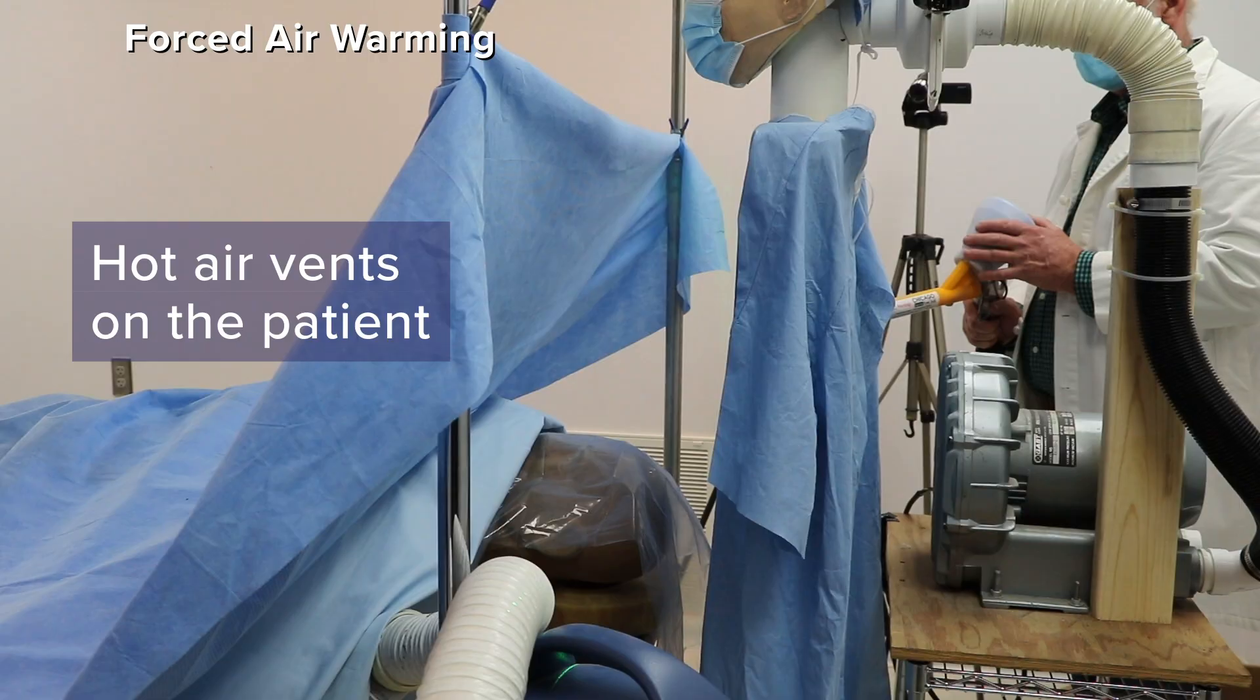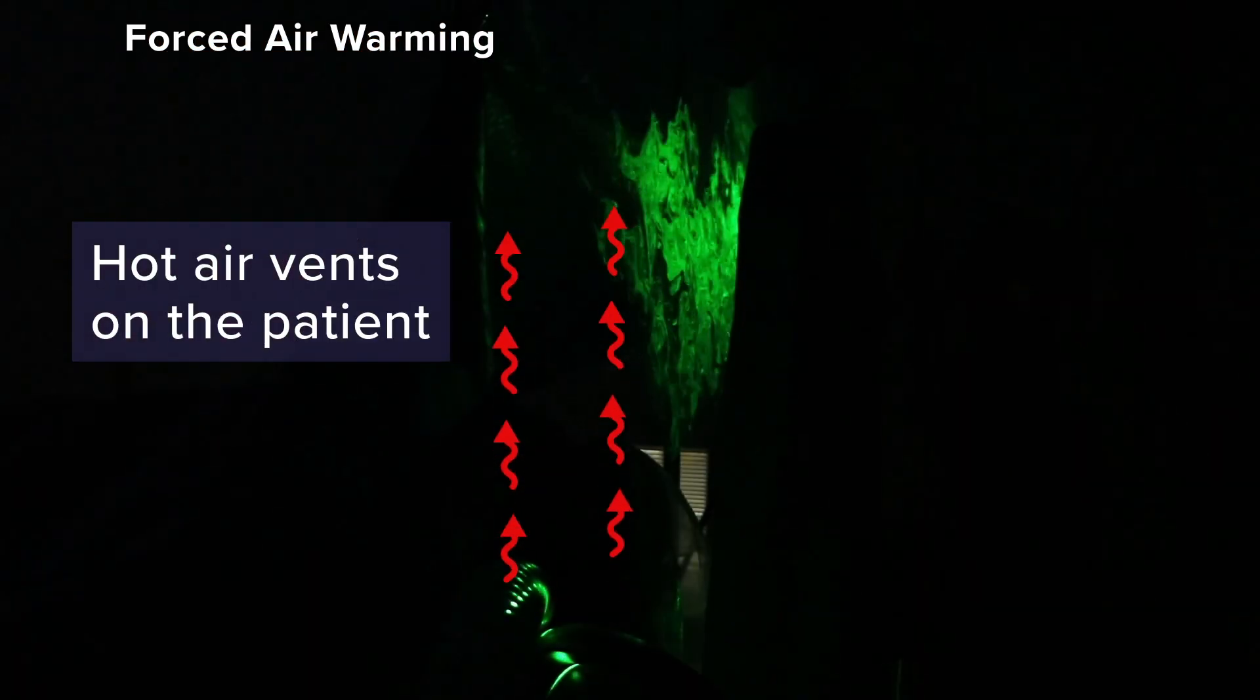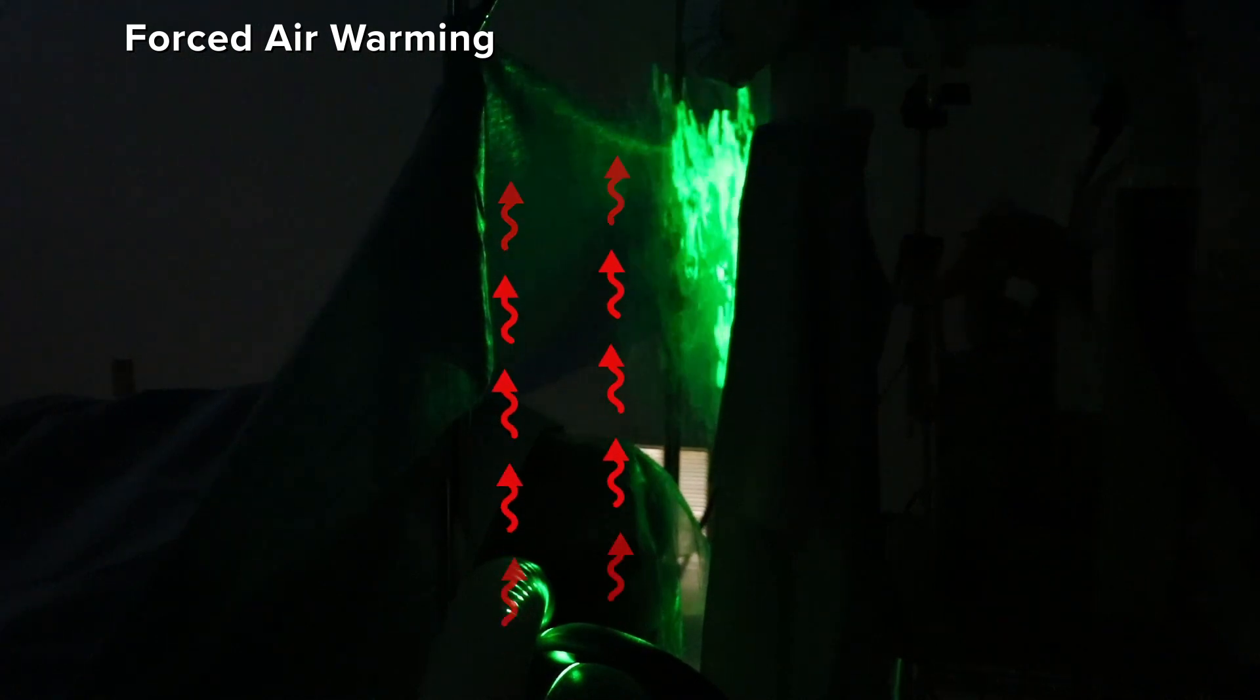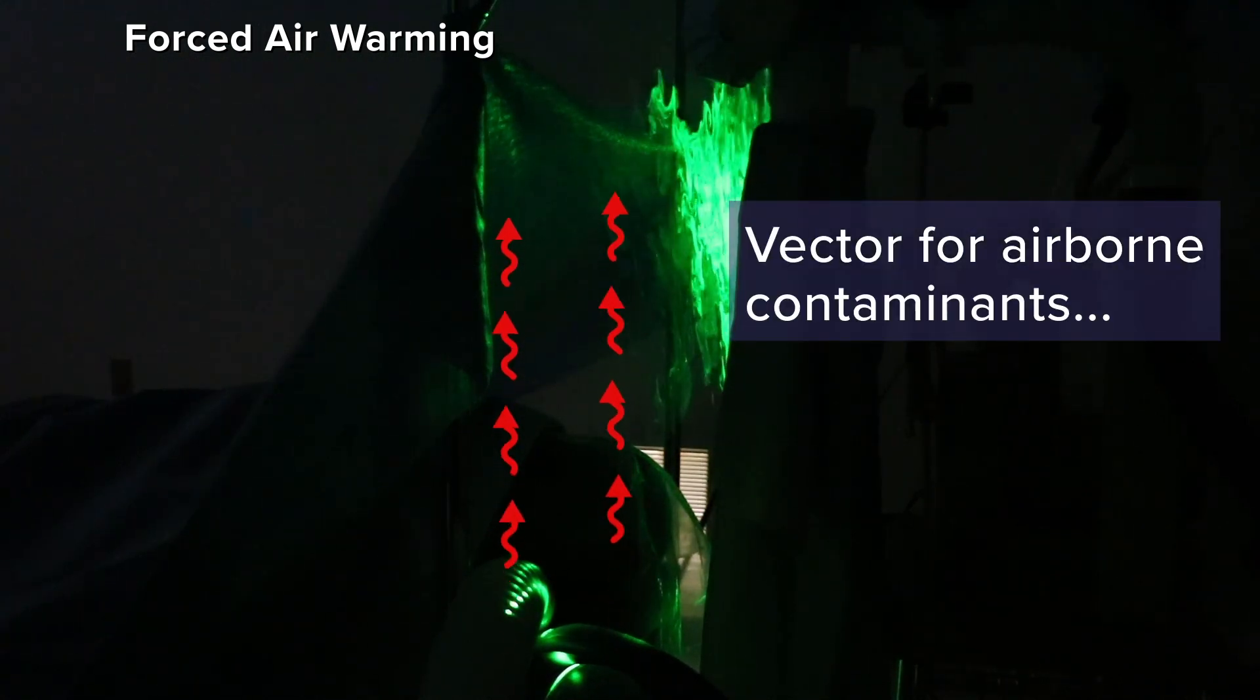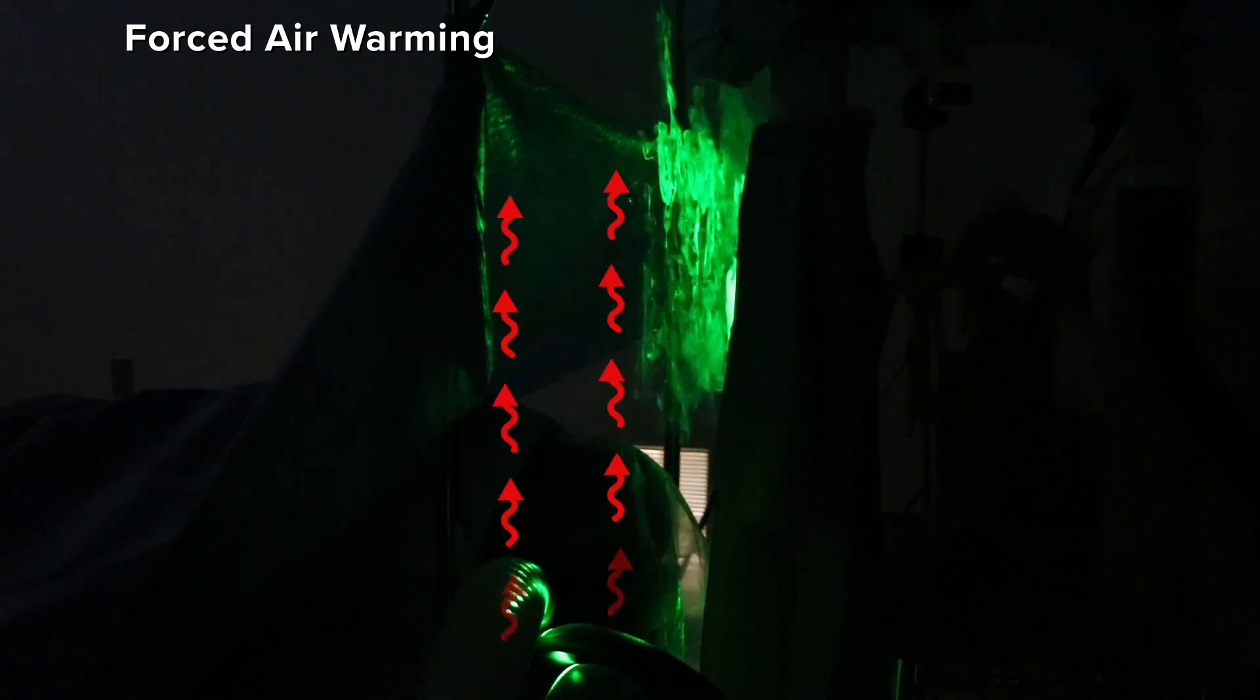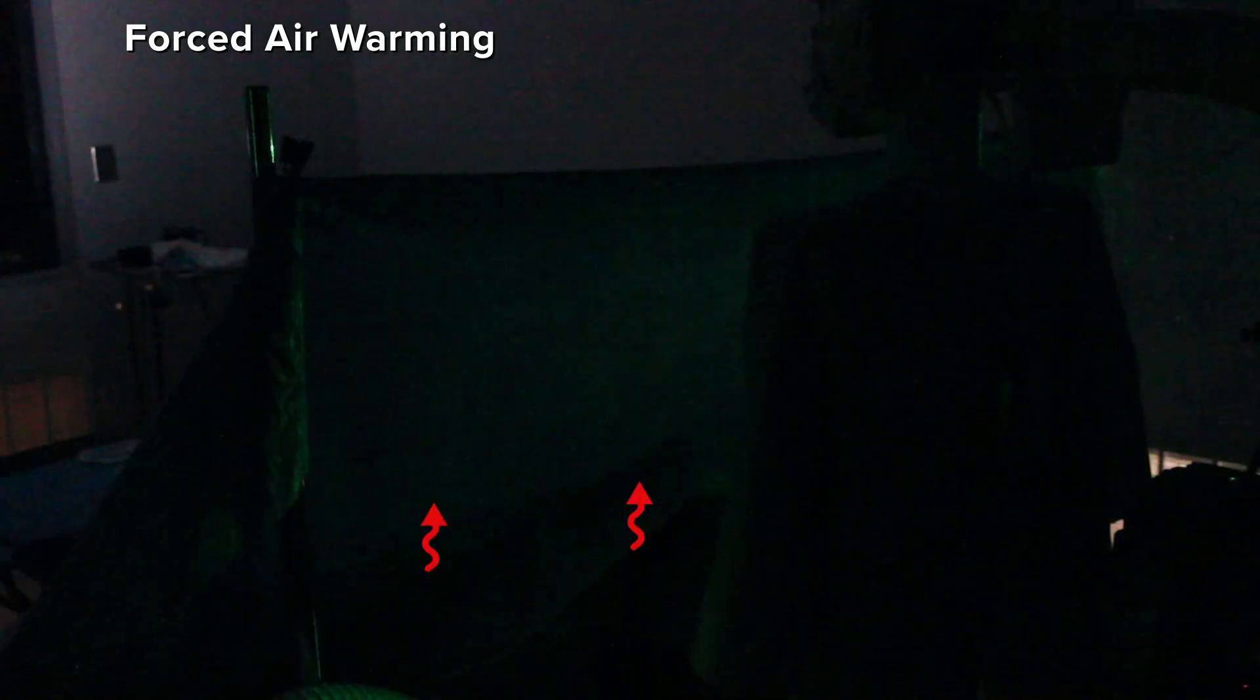Forced air warming systems blow hot air to warm the patient. The hot air is vented under the blanket, escapes, and rises along the anesthesia drape. The rising waste heat transports airborne contaminants, including bacteria and viruses, from contaminated areas.